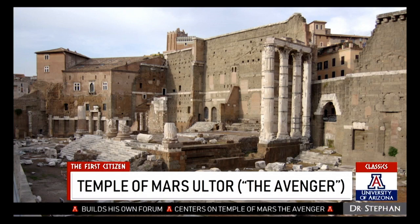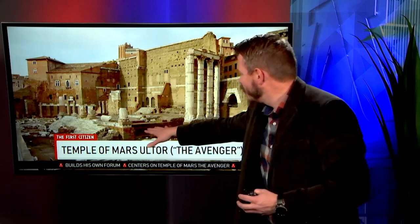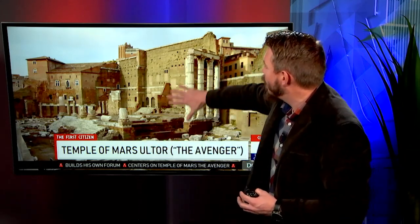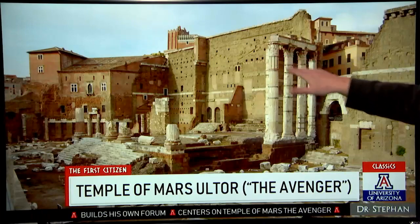Augustus also undertakes a building program. Next to the Roman Forum, just as Julius Caesar had built his own little forum, Augustus does the same — what you're looking at here is the Forum of Augustus. As its centerpiece we get the Temple of Mars Ultor, which translates as Mars the Avenger. Who is Mars avenging? Of course, he's avenging the death of Caesar. This is put up in commemoration of his assassinated father. You can see some of the ancient columns, the podium on which the temple was built, and this back wall, which is all original ancient Roman. You can actually see where the ceiling of the temple used to be.